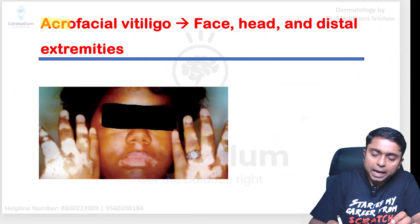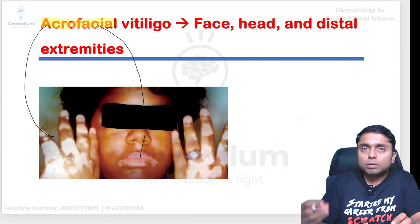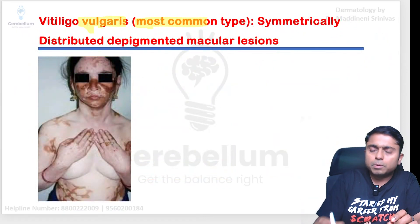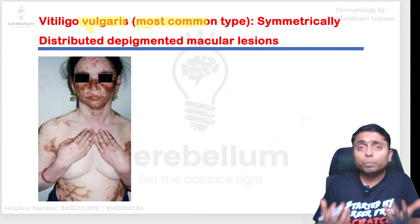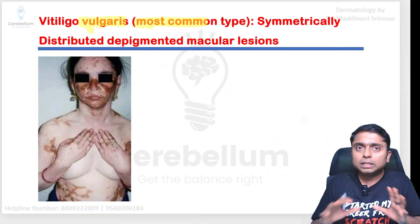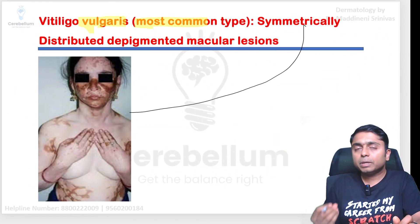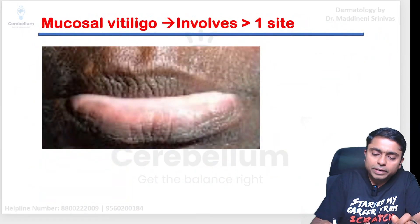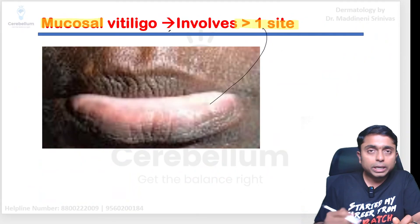Non-segmental vitiligo has various subtypes. First, acrofacial vitiligo — 'acro' means extremities and 'facial' means face, so these areas have depigmented lesions. Next is vitiligo vulgaris — wherever 'vulgaris' appears, remember it is the most common type of that disease, such as acne vulgaris, psoriasis vulgaris, pemphigus vulgaris, lupus vulgaris. In vitiligo vulgaris, bilaterally symmetrically distributed depigmented lesions are present over the entire body. Then there is mucosal vitiligo, where more than one mucosal site can be involved.